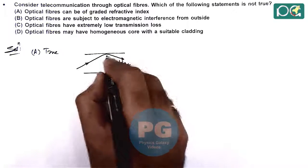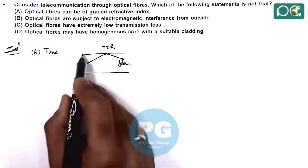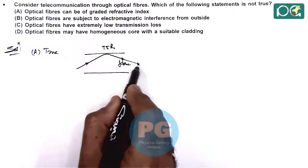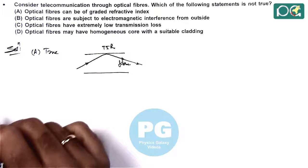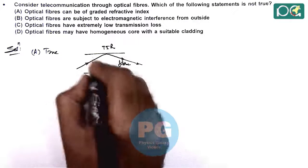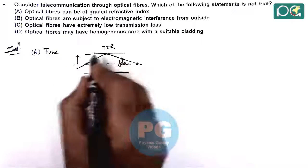And because of total internal reflection from the outer core or cladding, the transmission of light takes place which carries all the information.